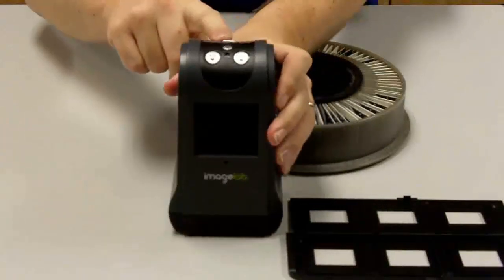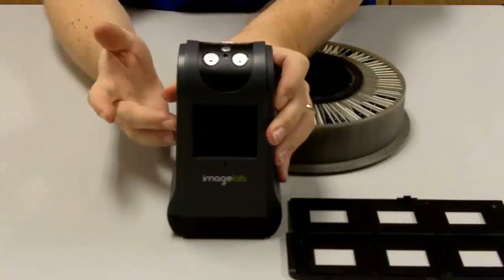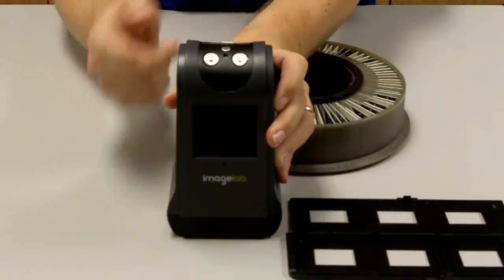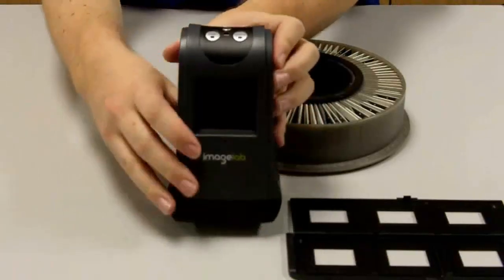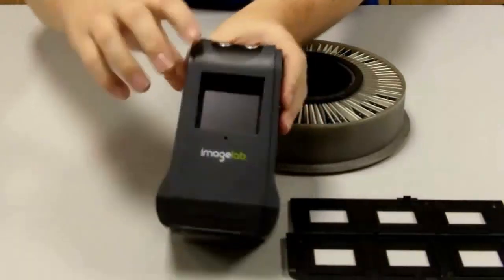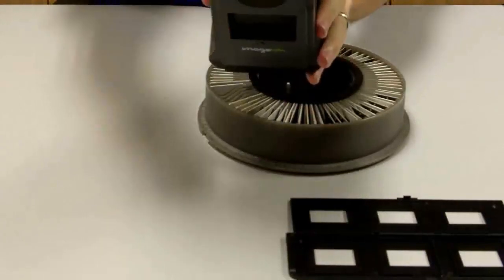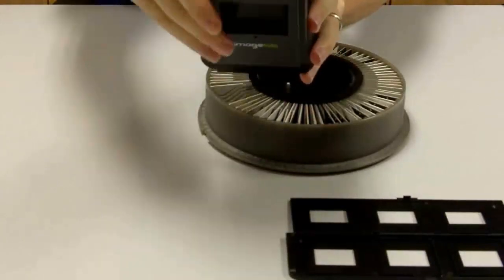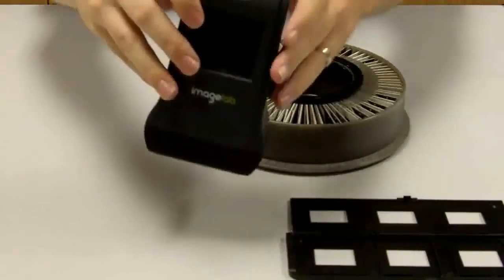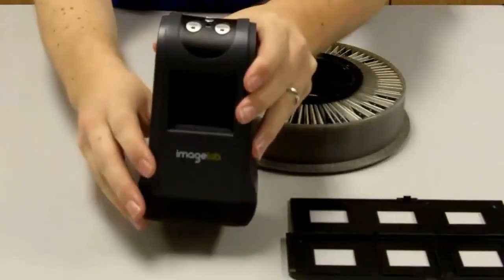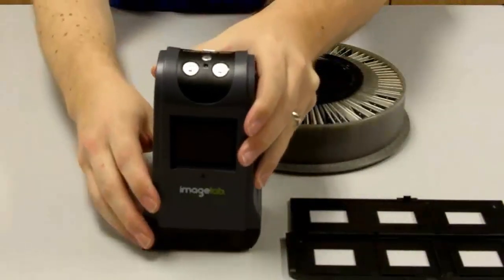There's a selector switch that really, for your purposes, all you'll care about is the off and scan positions. Off, of course, being when you're not using it. And then if you are processing slides, there's a scan slide button. If you should happen to be doing film strips, there's actually a negative button as well. But for these purposes, let's just talk about slides, because that's the most common thing.